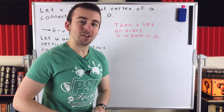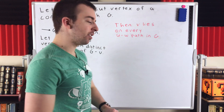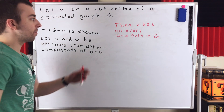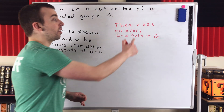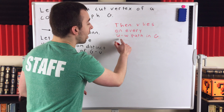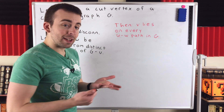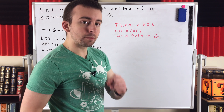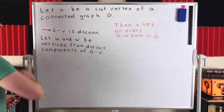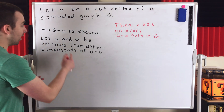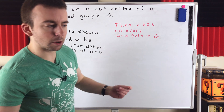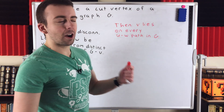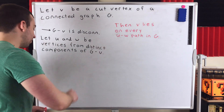G is a connected graph, so by definition there was at least one path connecting U and W in G. The theorem tells us, given these circumstances, the cut vertex V must lie on every one of those UW paths in G. That should make sense because if V doesn't lie on every UW path in G, then one of those paths that doesn't contain V would still exist in G minus V. Thus, by definition, U and W couldn't possibly be in distinct components because there's a path that connects them. Let me draw a diagram to make it extra clear.